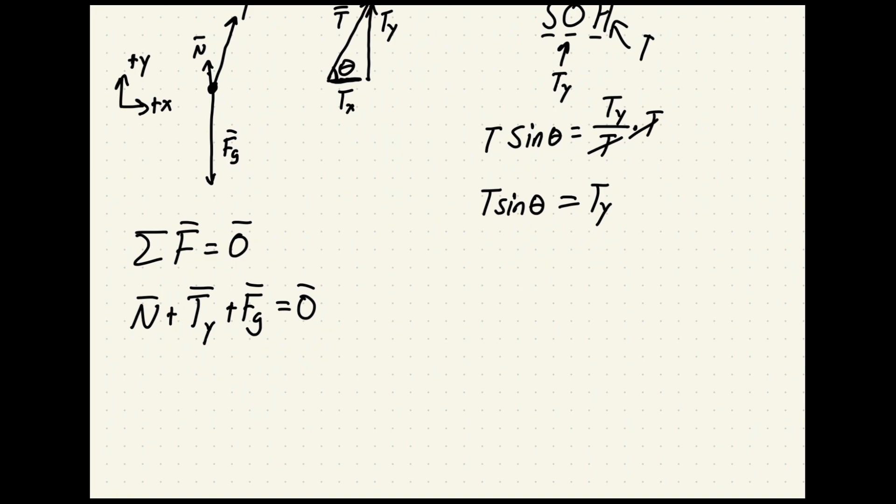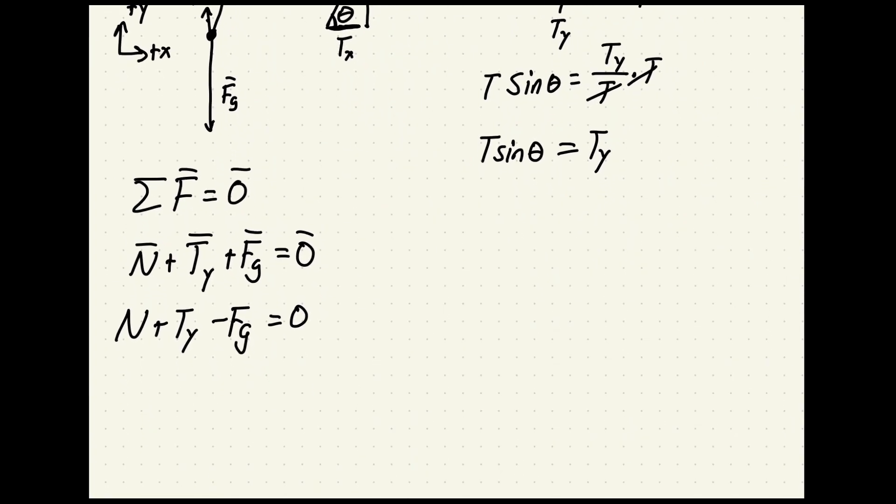All right. Once again hopefully we got that done but we have our normal force that's in the positive direction so it stays positive. Tension force is also positive and our gravity force points in the negative direction. So there it is. Normal plus tension in the y direction minus Fg.